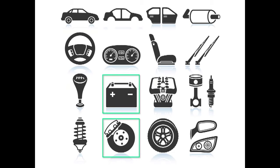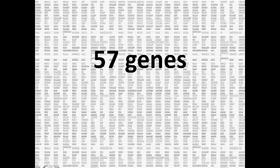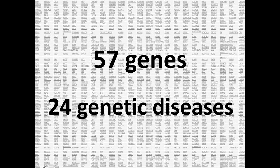Similarly, when you have your exome sequenced, you can ask your geneticist to have the laboratory look for a small number of secondary findings, unrelated to the main reason you are having the test. There are 57 genes — 57 extra secondary genes — that we can look at to check for genetic mutations. These genes could provide us information about 24 different genetic diseases. The test allows us to look at all 57 genes or none of them, but you are not able to pick and choose which you want to know about. For instance, you can ask to have both the brakes and the battery checked, but you cannot have just one of them checked.